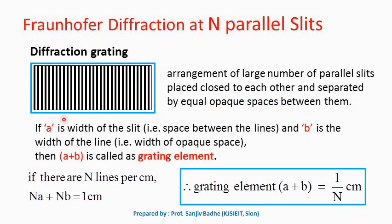This diffraction grating can be obtained by drawing a large number of parallel lines on a glass plate with the help of a sharp diamond tool. Each line acts as an opaque space and the space between two lines acts as a slit.